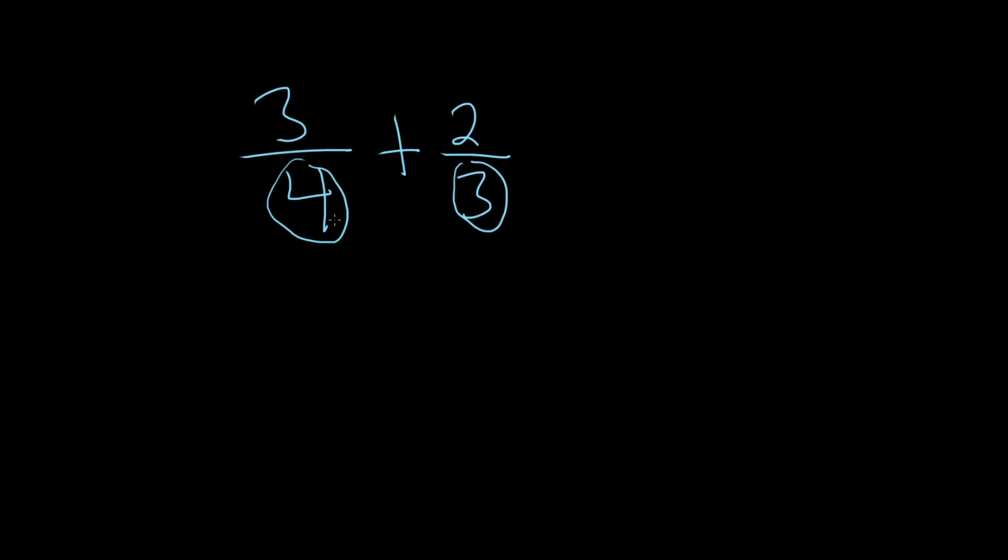If you multiply these two, that will always give you a common denominator. So 3 times 4 equals 12. That's going to be your common denominator. You can always do that - just multiply those two.